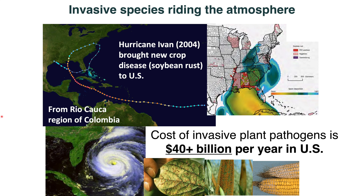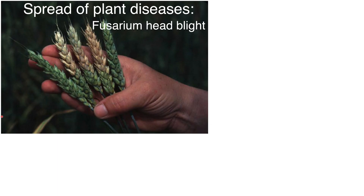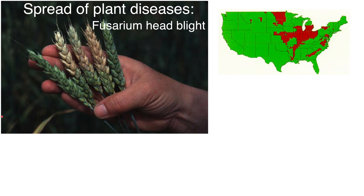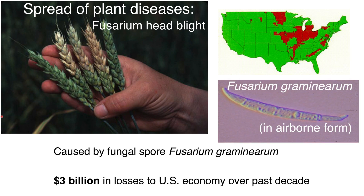We'll focus on a disease of wheat, Fusarium head blight, which affects the wheat-growing regions shown in red in the upper right. It's caused by a fungal spore with an elliptical banana shape, roughly 10 microns long. This spore has led to $3 billion in losses to the United States economy over just the past decade.